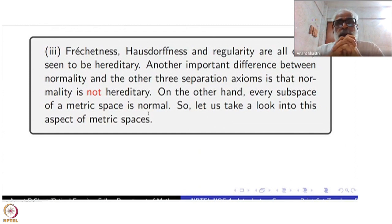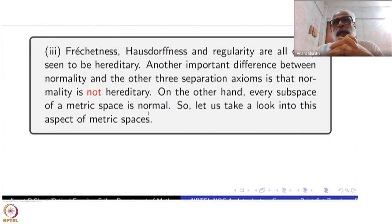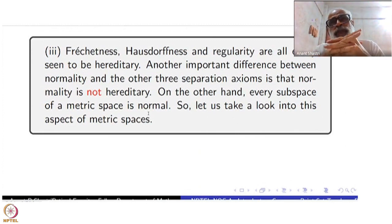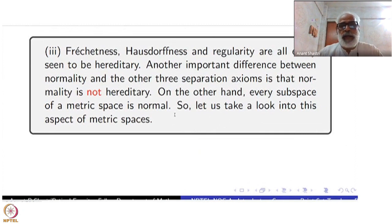In fact, normality is not hereditary and we have to construct a counterexample for that. On the other hand, metric spaces are Fréchet, regular, and normal — very easy to prove. In fact, every subspace of a metric space is also metric, therefore every subspace of a metric space is also normal, whereas a subspace of a normal space may not be normal. So let us take a new look at metric spaces.